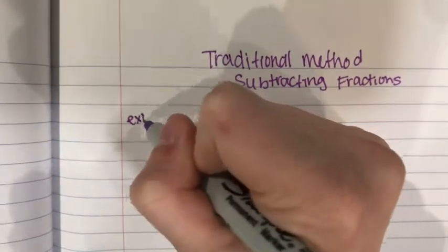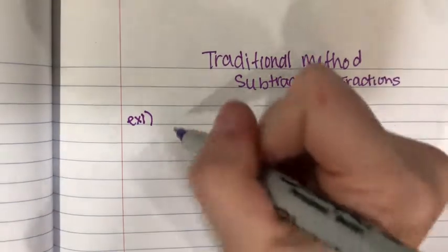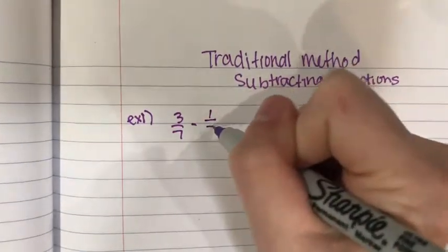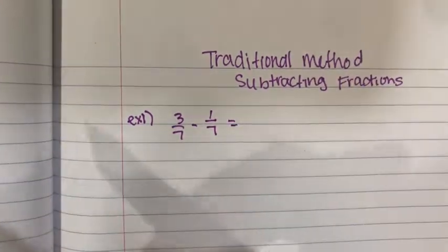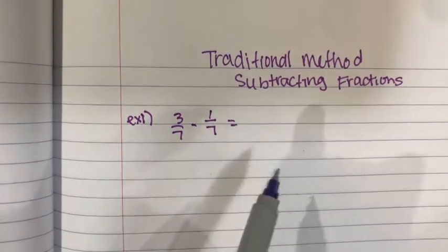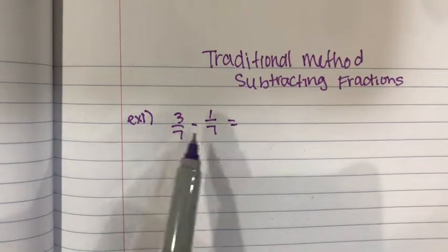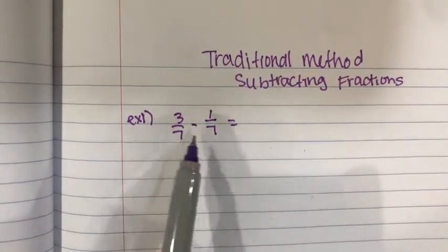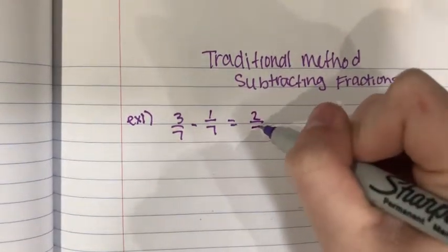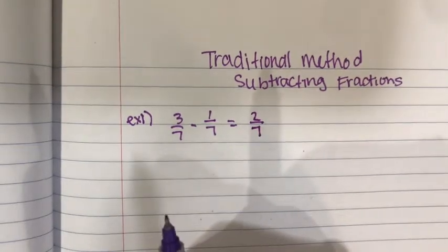The first example that we are going to do, the denominators are the same. So I can show you what you do when they are equivalent. Very much like adding, when it comes to subtracting it is the exact same rules that you cannot have different denominators and then you are just going to subtract straight across. So 3 minus 1 equals 2 and then bring over your denominator which is 7. So 3/7 minus 1/7 equals 2/7.